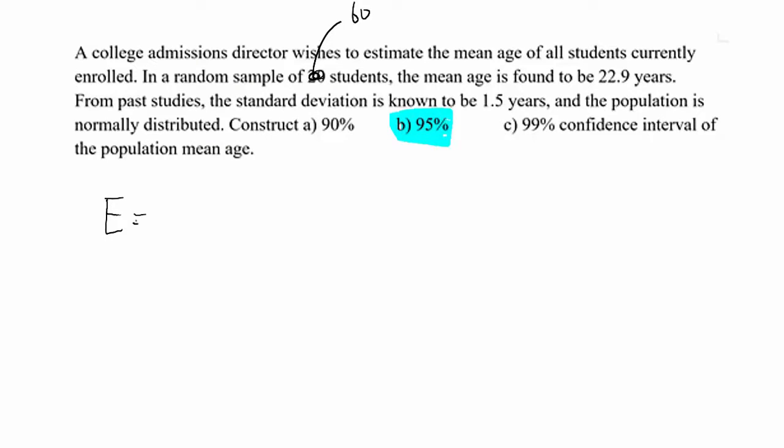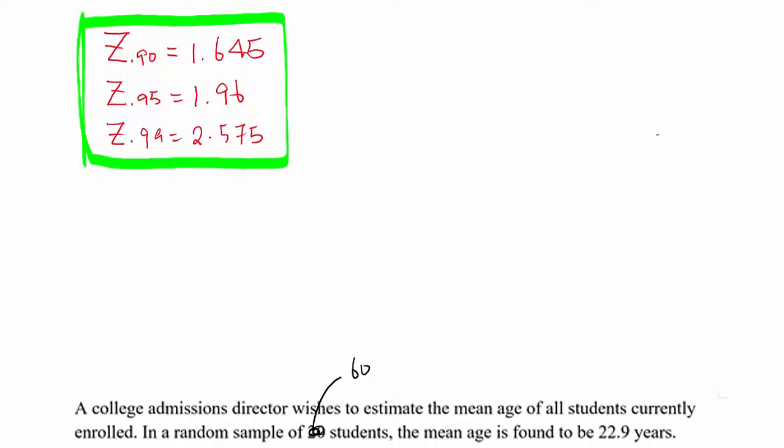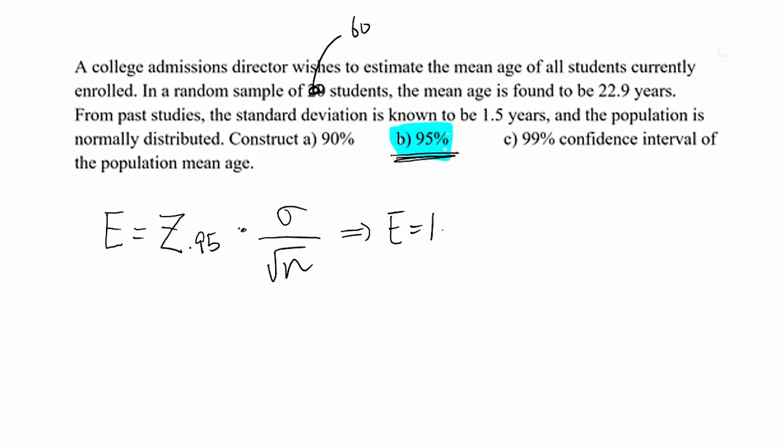To find error, E equals, first of all, you need to determine what percent confidence interval. We should say 95%. So I'm gonna put Z_95% times the margin of error, which is σ over square root of the sample size, which is root n. So this case, error will be 95%. How was the 95% confidence level value? It was 1.96. So you put 1.96 times σ 1.5 over root 60. Then you will get 0.37955.